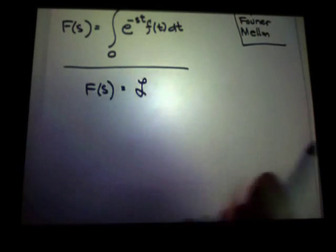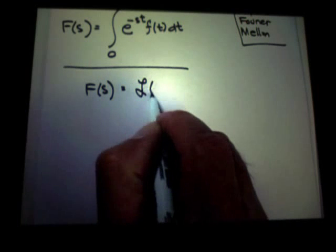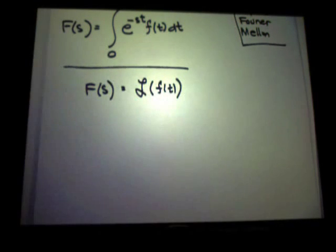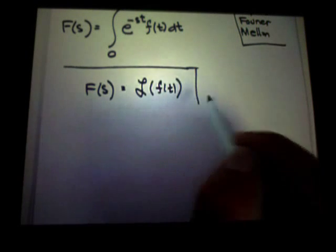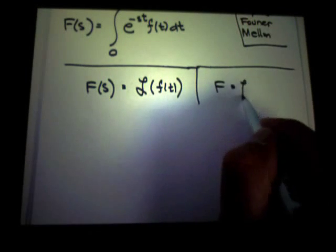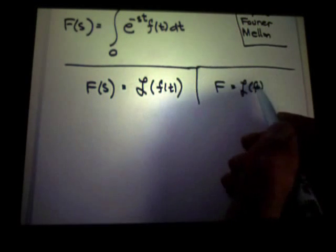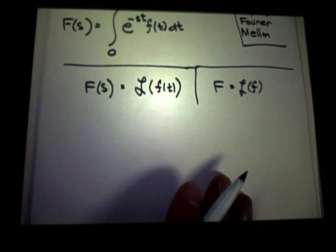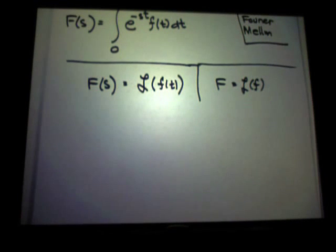So that's the basic definition. We write, for shorthand, script L, like the British pound sign without the line through it. Script L of f of t. And if you want to be really trendy, you can even write this. And you'd know what you meant there as long as the context is clear.